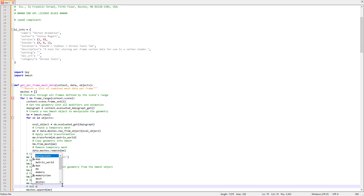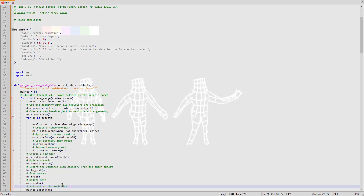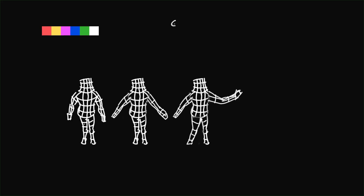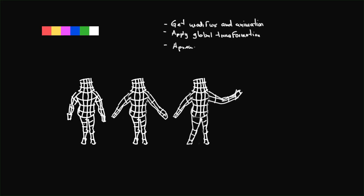Here is a simple drawing of what's going on in this function. We obtain multiple meshes corresponding to each frame in the animation. Then for each mesh we get the modifiers and animation, apply a global transformation, and finally we append all the meshes into a list.